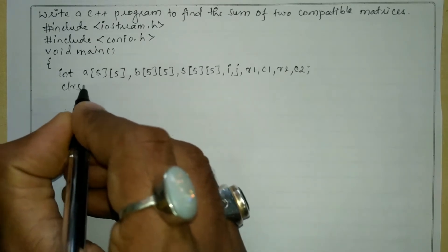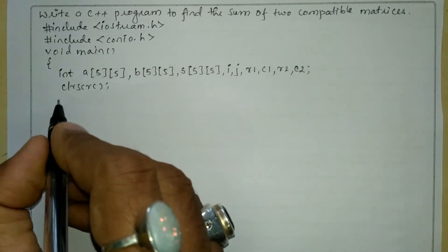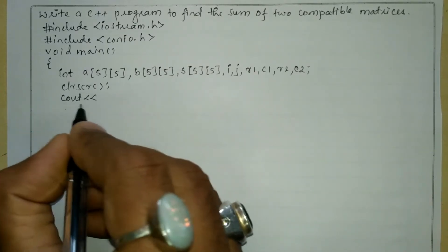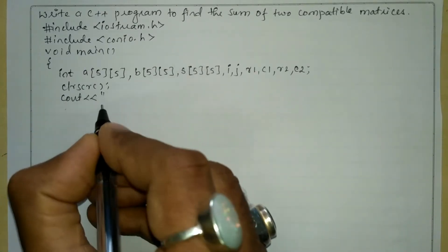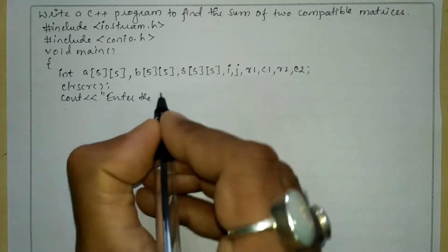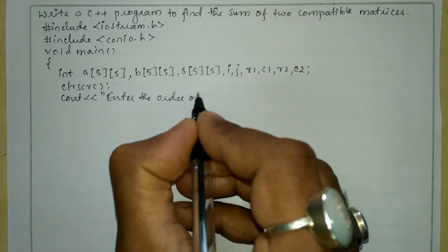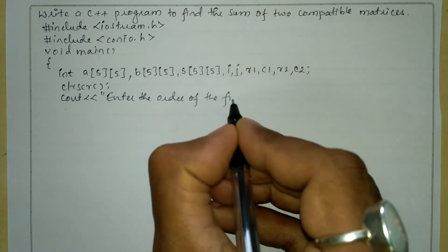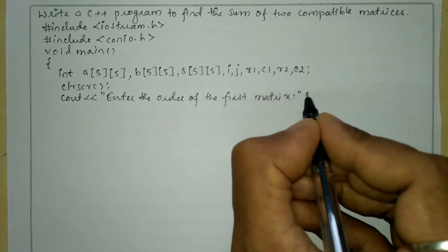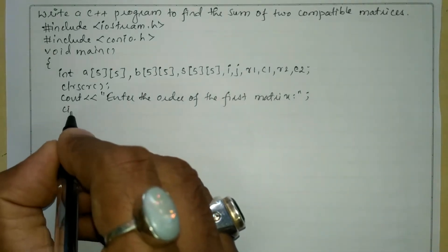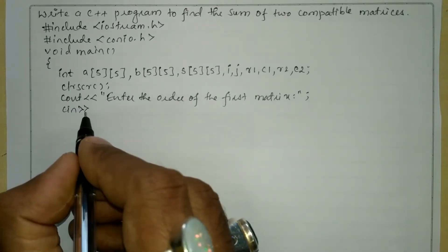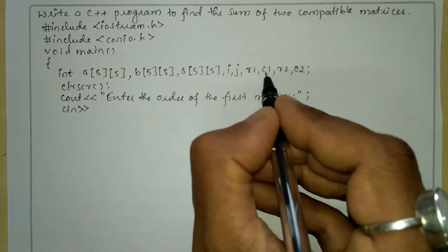Now let us write the clrscr function which is used to clear the screen. Now we will ask the user to enter the order of the first matrix using the cout statement with stream insertion operator in double quotation marks: "enter the order of the first matrix". We are going to receive the response from the user through the keyboard using cin with stream extraction operator, taking R1 and C1.